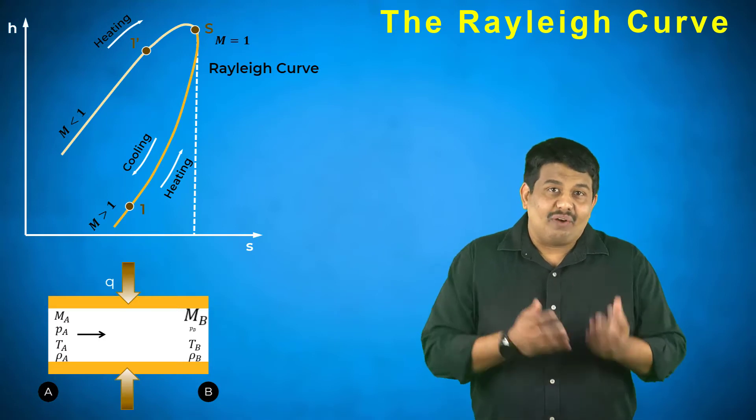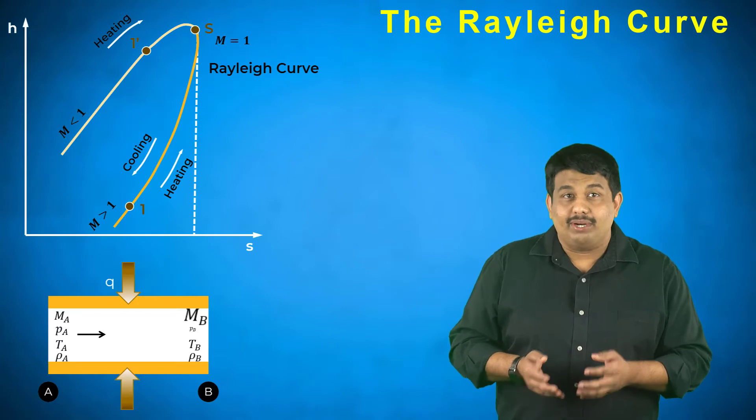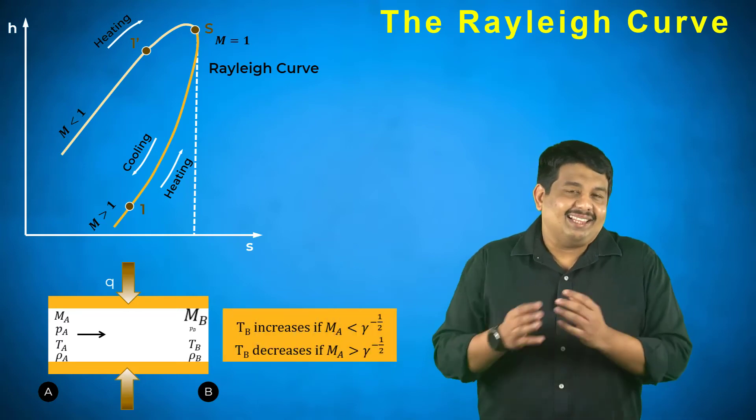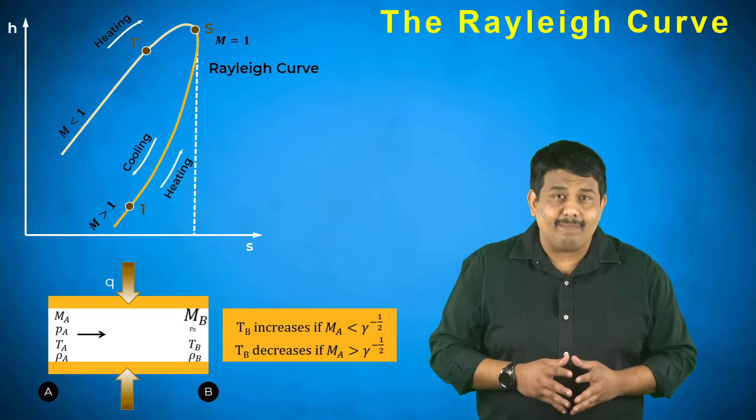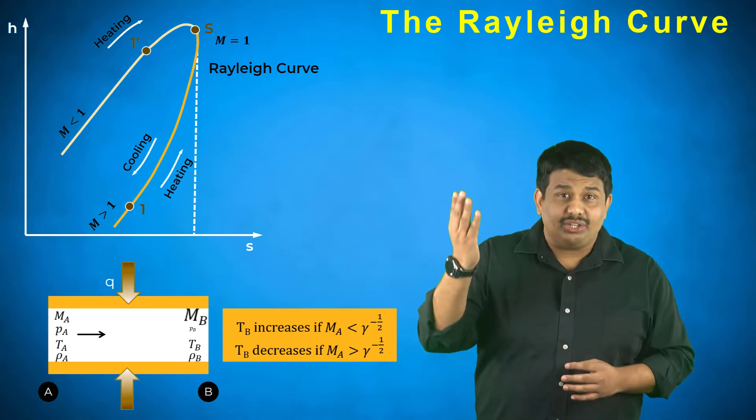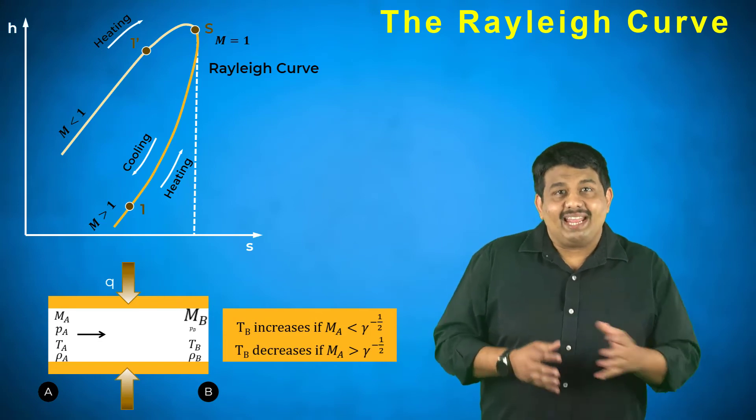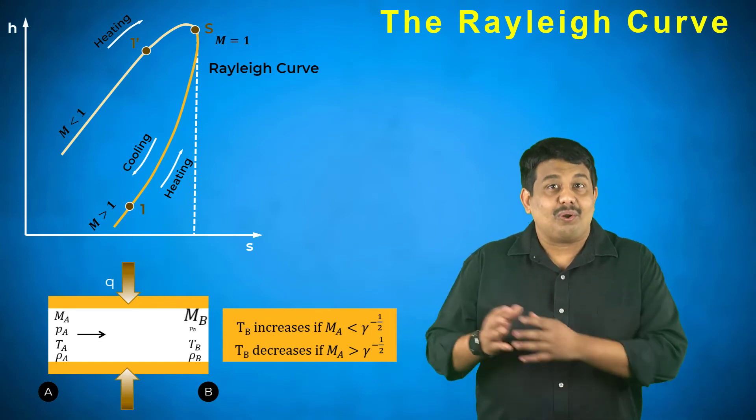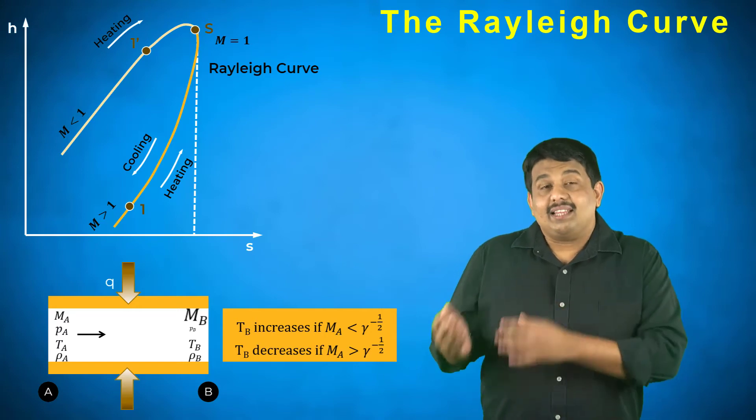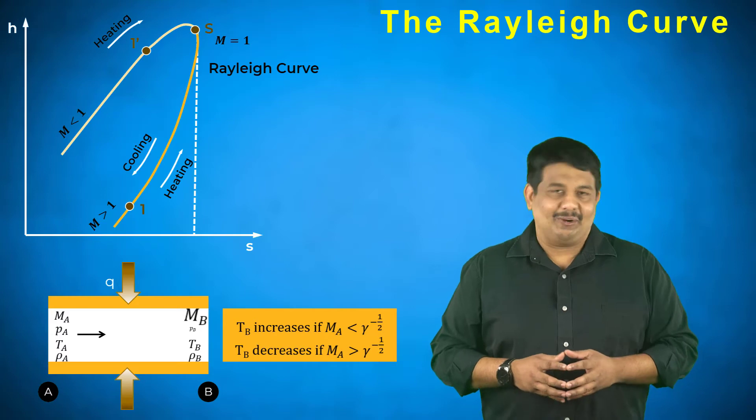The temperature of the fluid behaves interestingly. If the upstream Mach number Ma is less than the square root of 1 over gamma, then the temperature in region B decreases when heat is added to the flow.